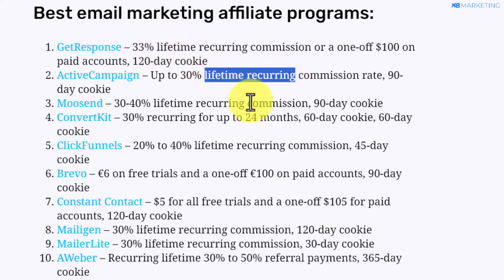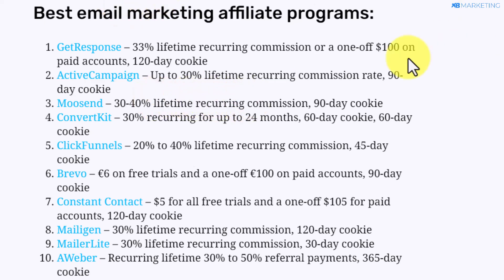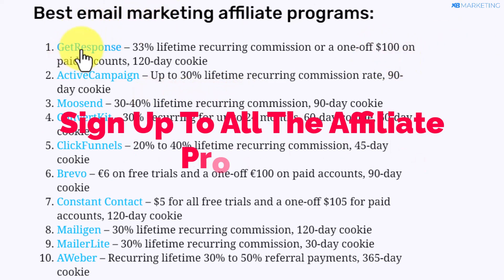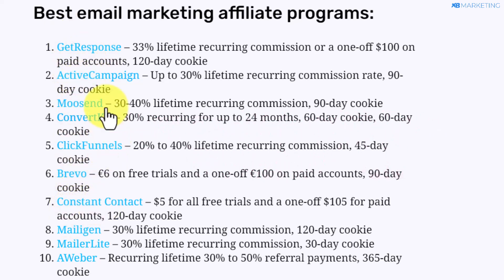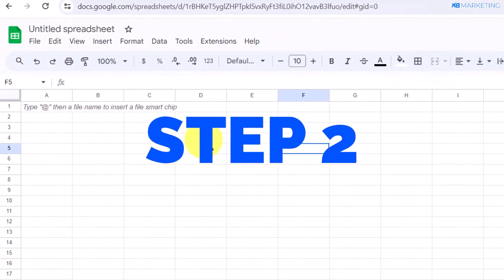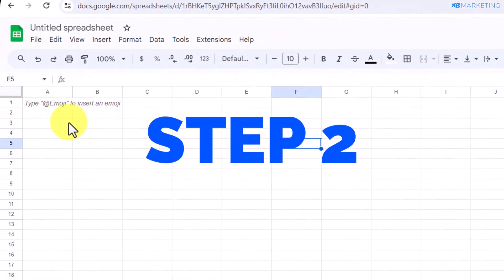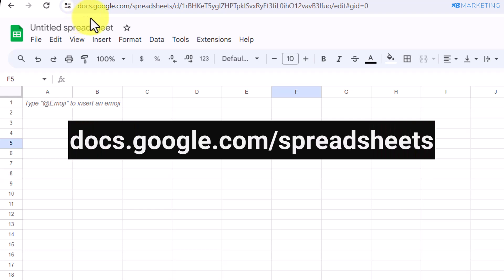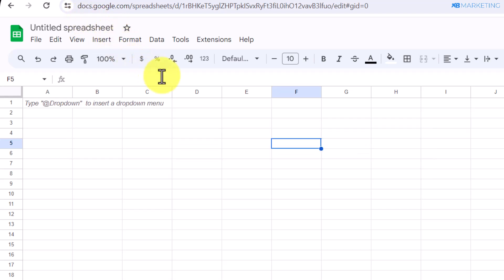Most of them offer a lifetime commission right here. So what you want to do next is to sign up for each of these email marketing software by clicking on the link. Once you sign up to the platform, the next step is to go over to your browser and type in docs.google.com/spreadsheets. Now you may be wondering what we need a spreadsheet for — I'm going to show you in a moment.